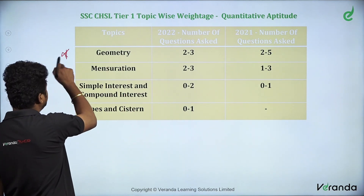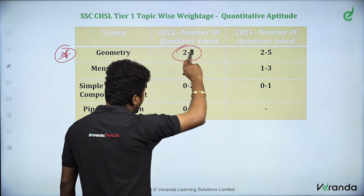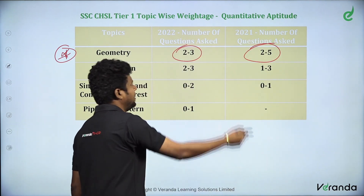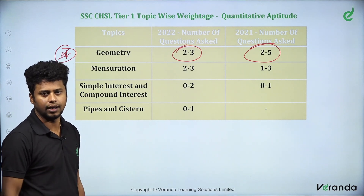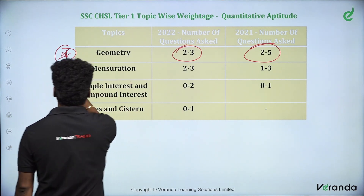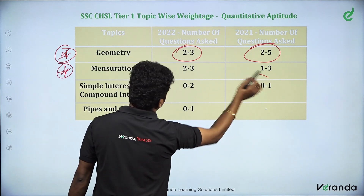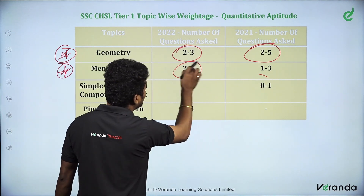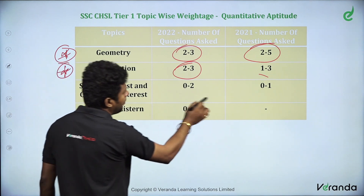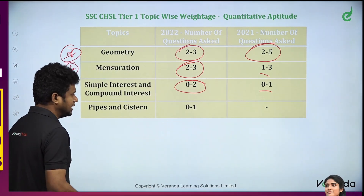The next topic is Geometry. There are 2 to 3 questions on Geometry, and if you are asked 3 questions, geometry is very important. The next topic is Mensuration. For Mensuration, you can expect 1 to 3 questions, roughly 2 to 3 questions. Simple Interest and Compound Interest together have 0 to 2 questions.